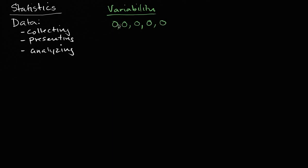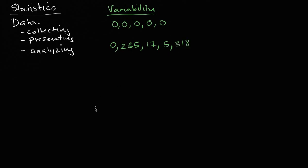Fair enough. So those were our data points — and I'm already doing statistics just by going out there and asking them how many bricks they ate. But then I ask them how many grapes did you eat yesterday. The first person says zero grapes, but the next person says I survive on grapes — I ate 235 grapes. The next person says I like grapes, I ate 17 grapes. Then the next says they ate five grapes, and the last person also survives on grapes — even to a larger degree, they ate 318 grapes.